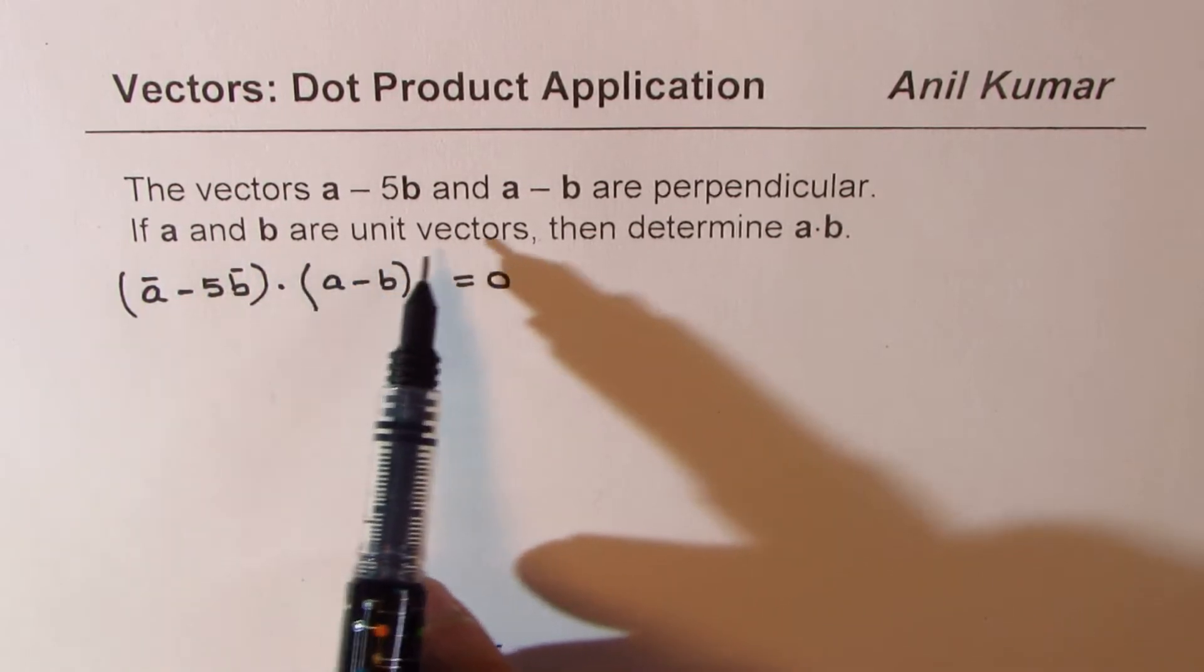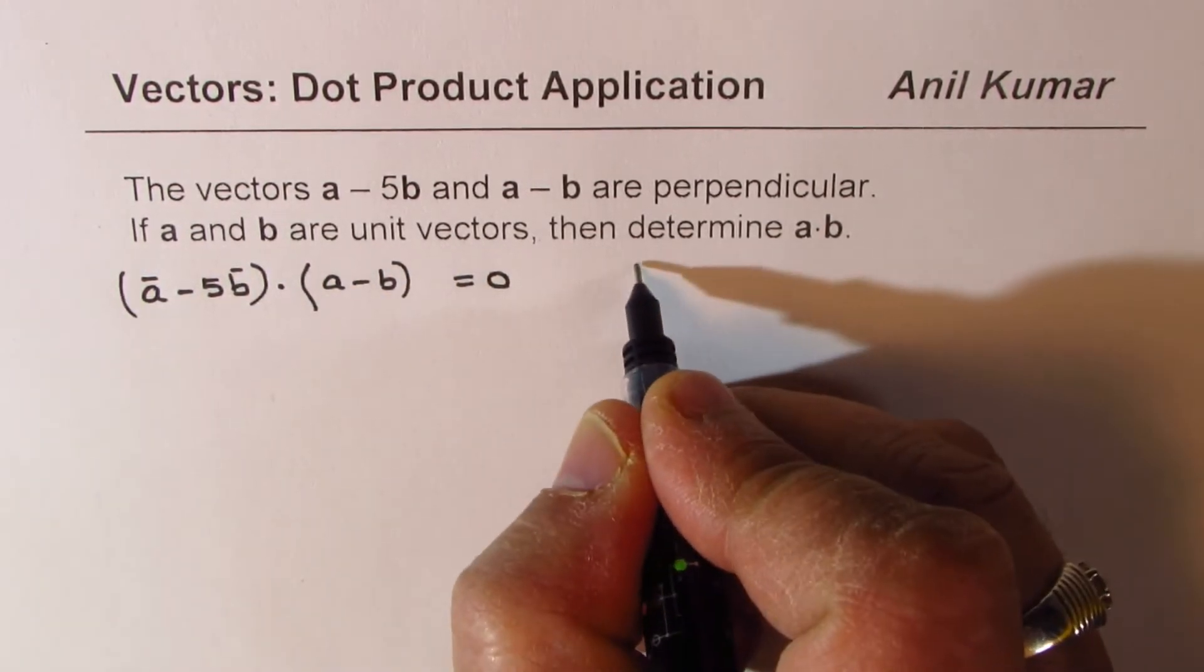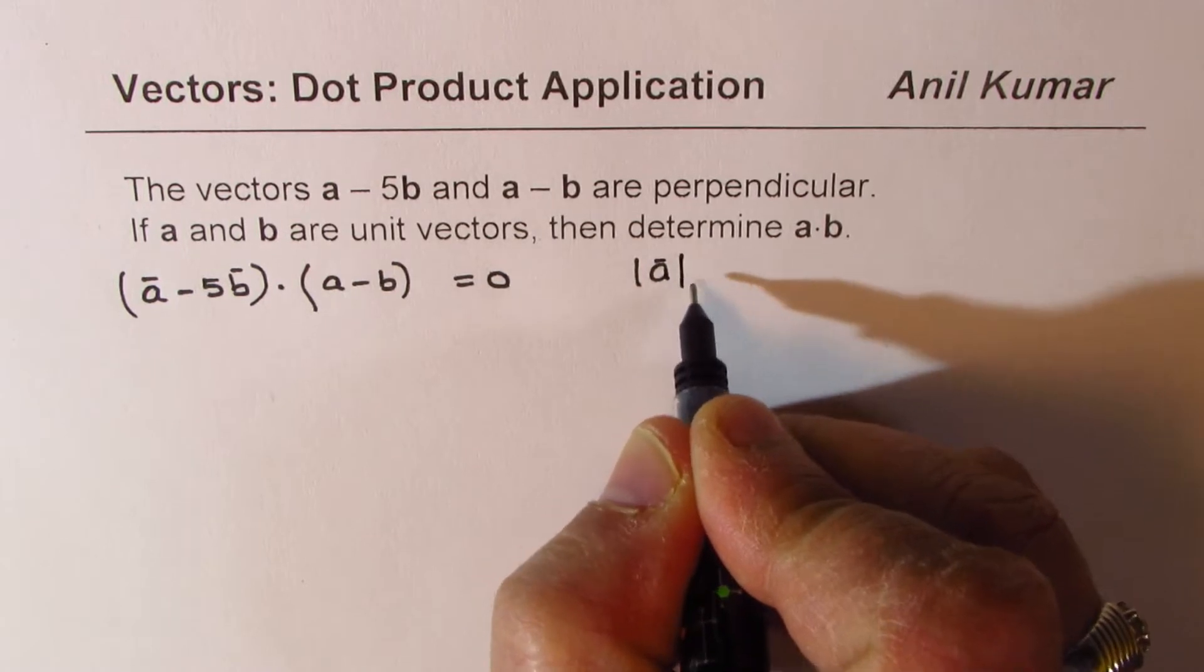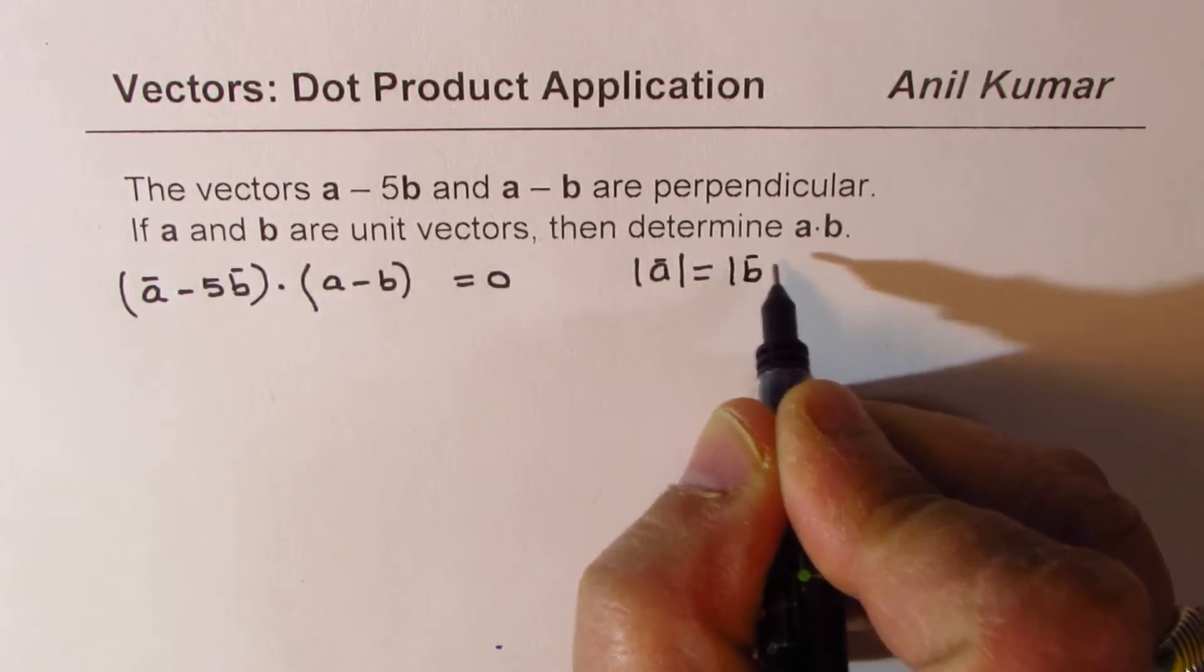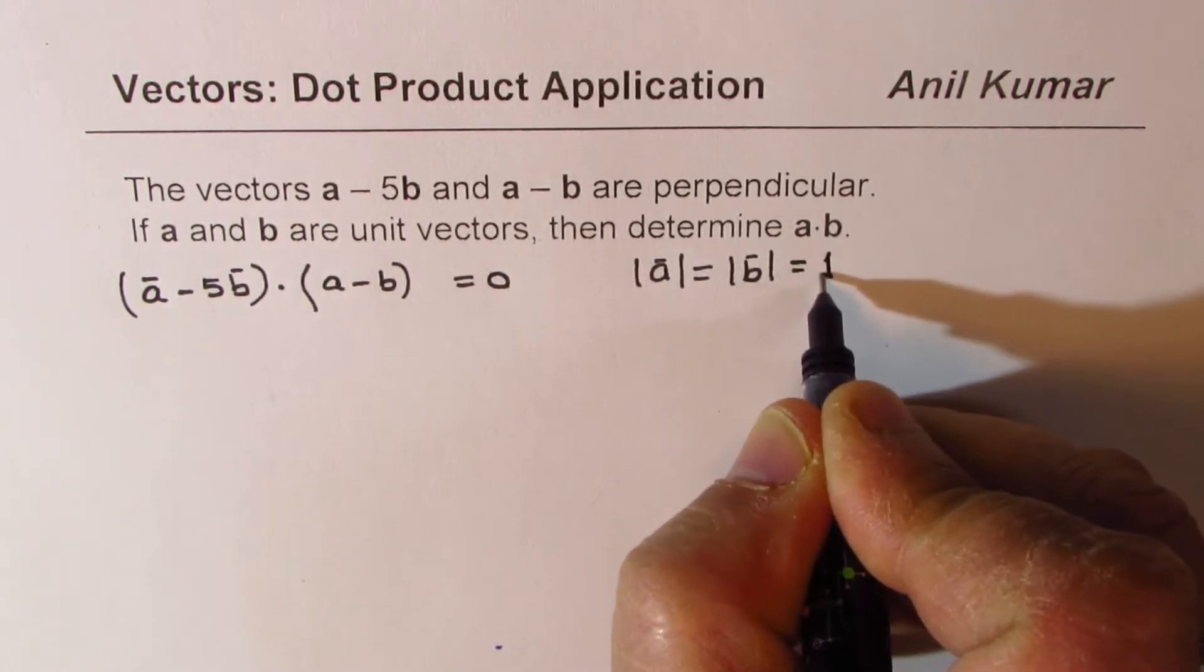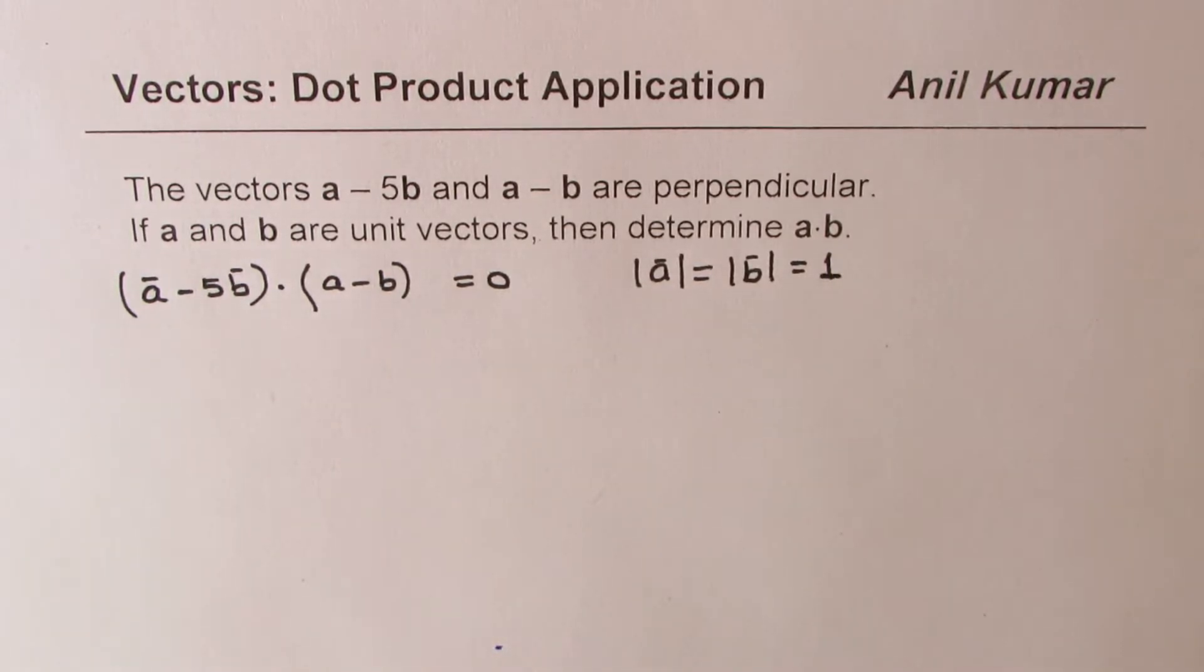If A and B are unit vectors, that means magnitude of vector A is equal to magnitude of vector B, and both magnitudes are just one, unit vectors.